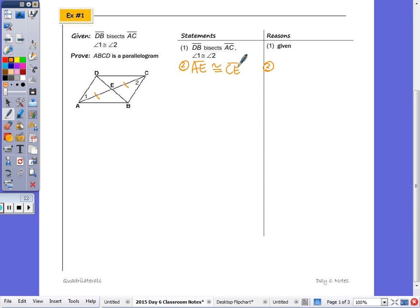You could say that E is a midpoint and then say that step, but you don't need to. That's because a segment bisector, just like an angle bisector, divides a segment into two congruent segments.